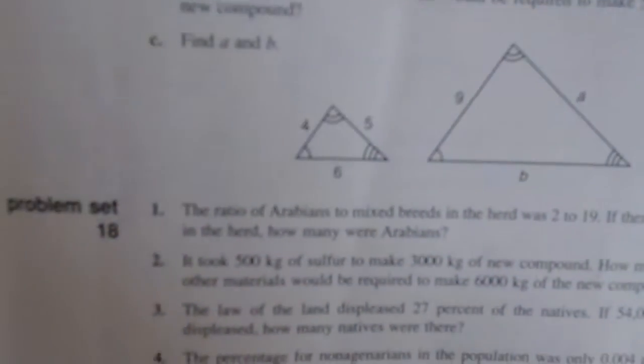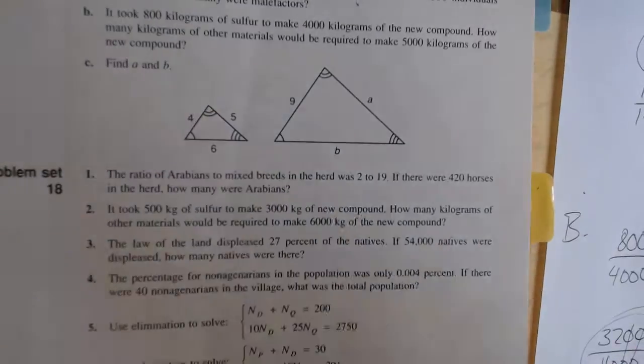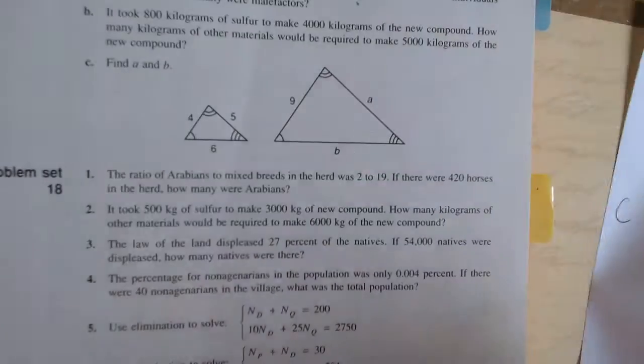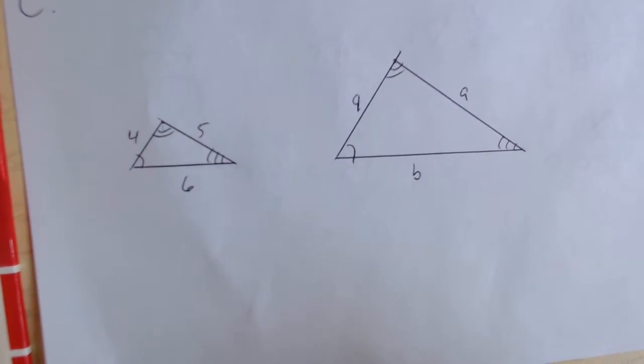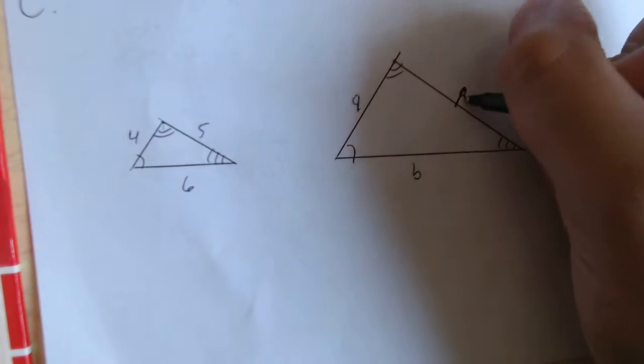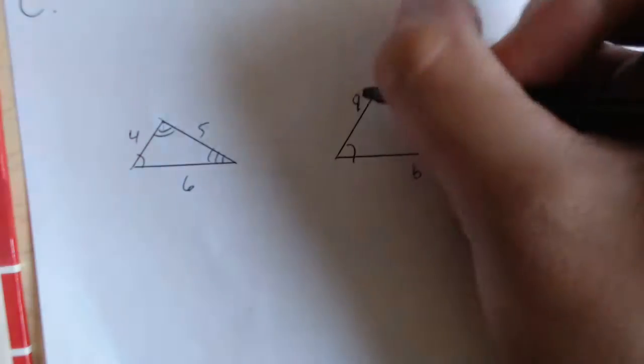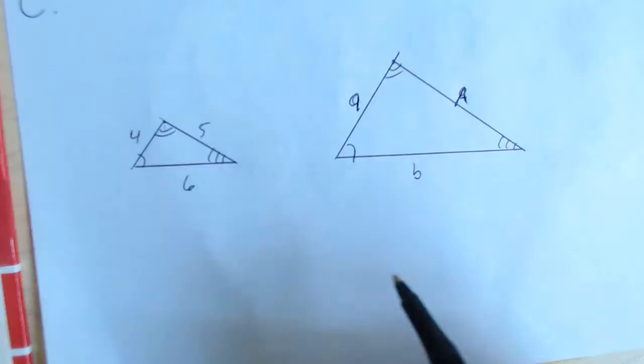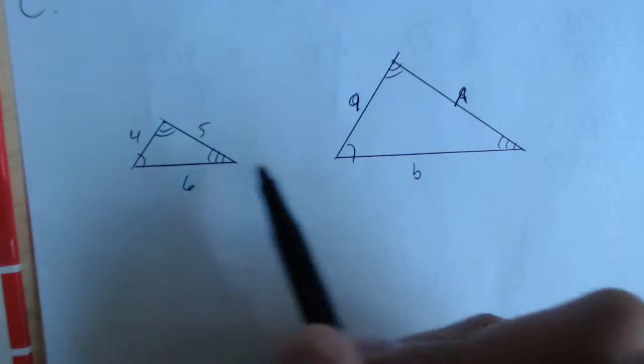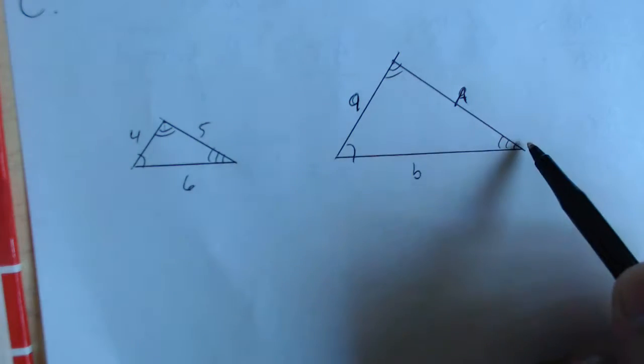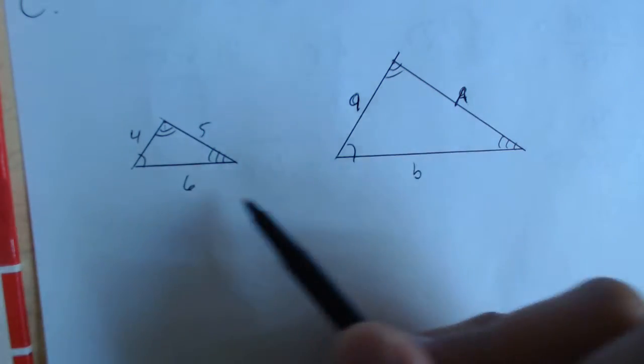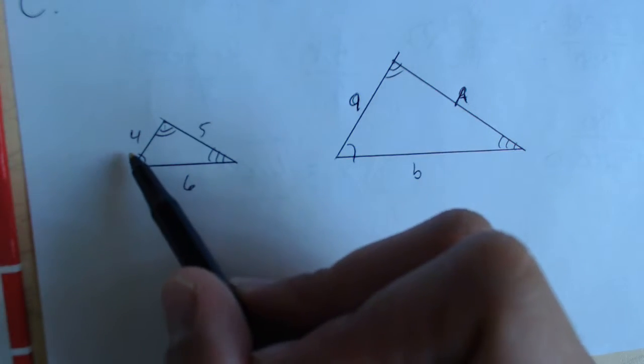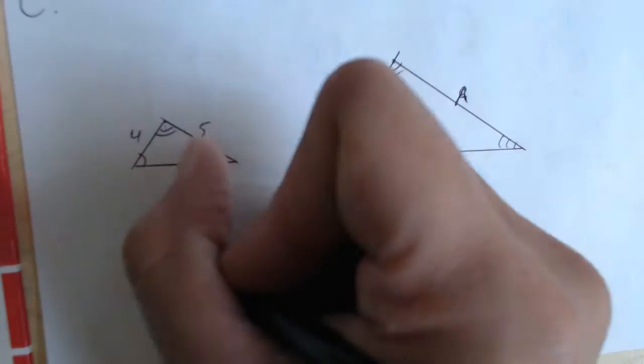Now, the very last problem is dealing with similar triangles and scale factor. I've got this drawn on my paper here so I don't have to draw my book. But they give us these two similar triangles and tell us to find the length of A and B. We know these triangles are similar because they have three equal angles. Now, we have to find the corresponding parts, which would be 4 and 9, 5 and A, 6 and B, and figure out how to convert them. So, we use a scale factor.